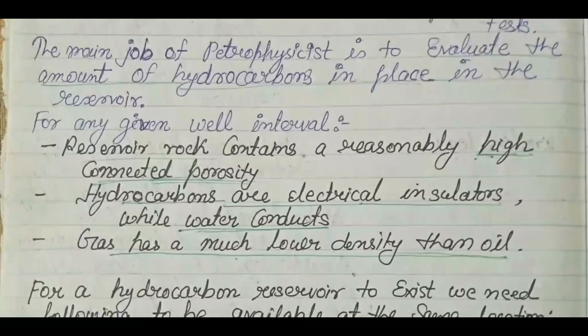A reservoir rock is a porous and permeable body from which water or hydrocarbons can be extracted. For any given well interval, reservoir rock contains reasonably high connected porosity — high connected means the porosity is good and permeability is good. If the pores are not connected, permeability will not be good. A separate lecture on porosity and permeability is coming.